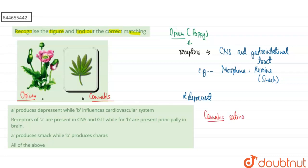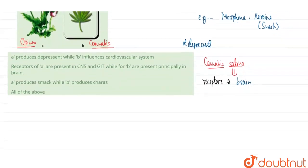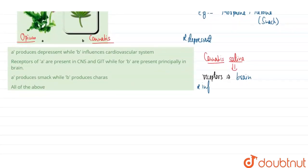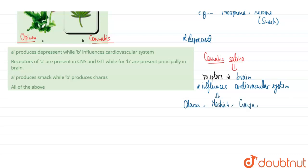Regarding the second plant, cannabis sativa: the receptors of cannabis are majorly found in the brain. Its major effect is that it influences the cardiovascular system of the person. Cannabis sativa produces hashish, ganja, and marijuana, which are common examples of cardiovascular influencers derived from this plant.